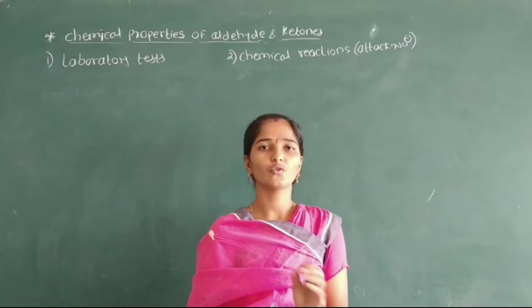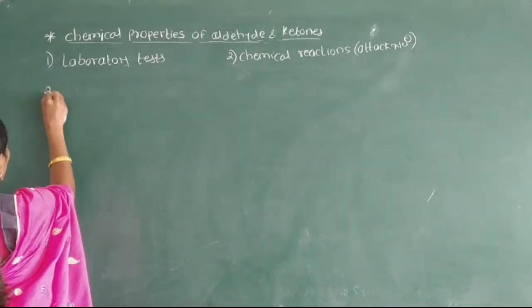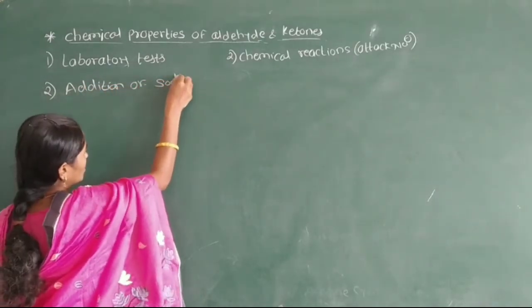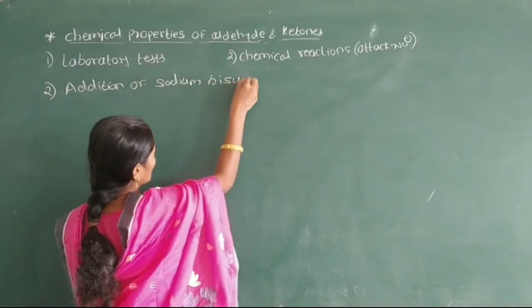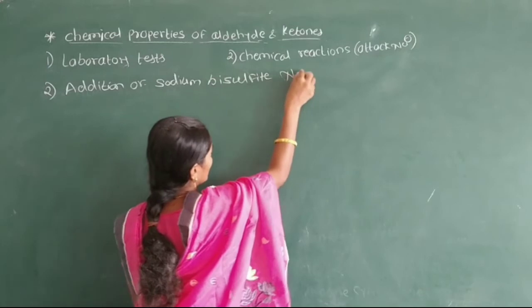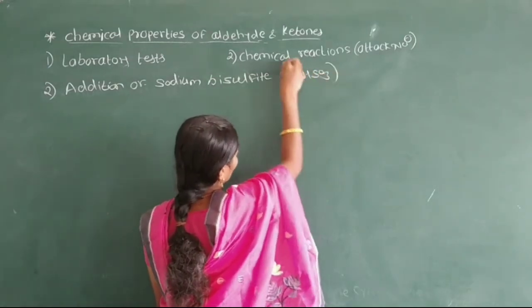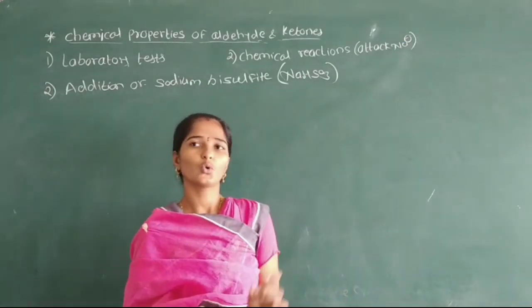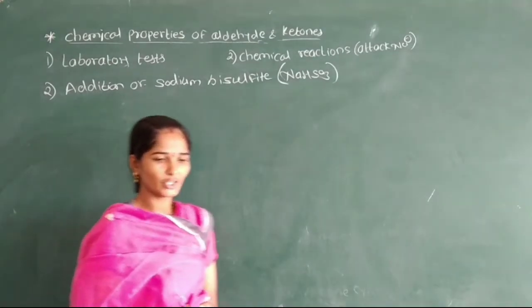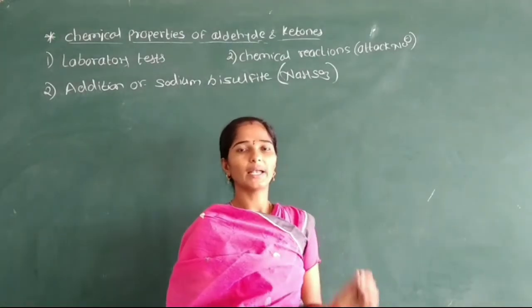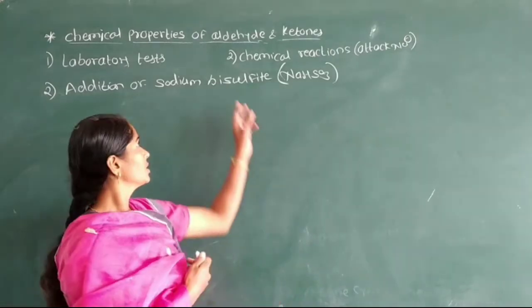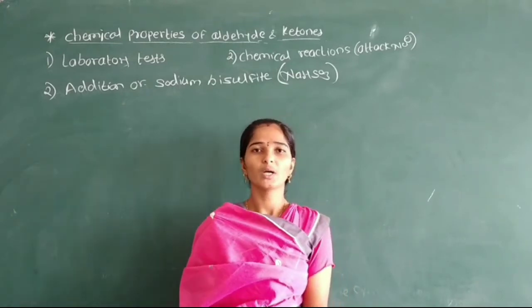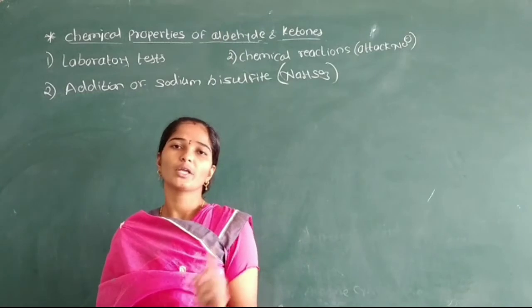Now we see the second chemical reaction of aldehyde and ketone: addition of sodium bisulfite. This sodium bisulfite reacts with aldehyde and ketone to form a sodium bisulfite addition product. In this reaction, the aldehyde or ketone reacts with a saturated solution of sodium bisulfite to form a crystalline precipitate — the sodium bisulfite adduct.